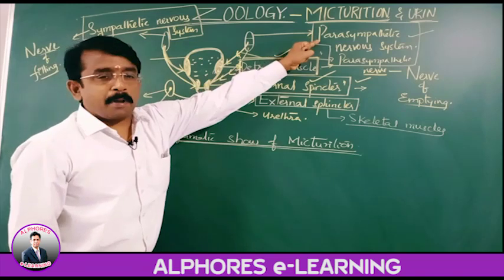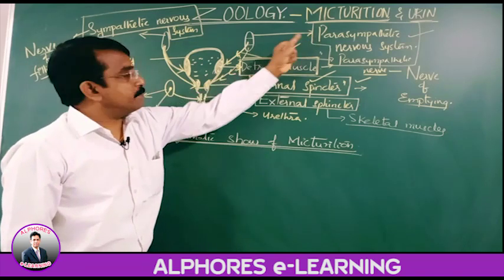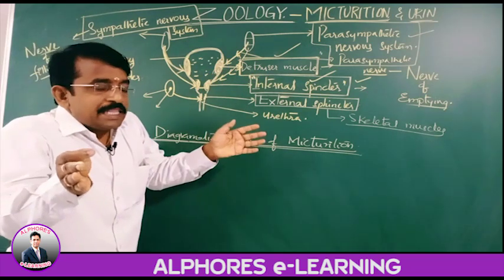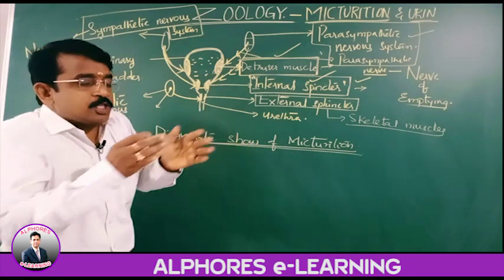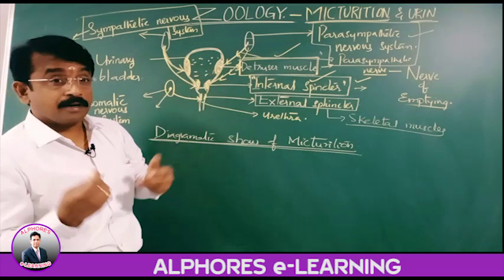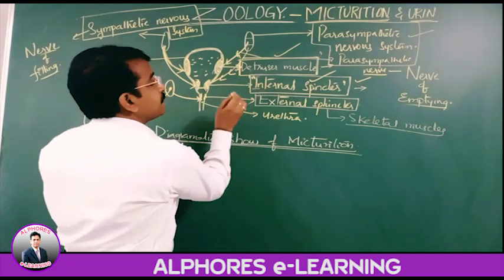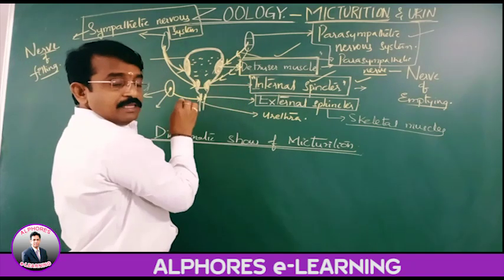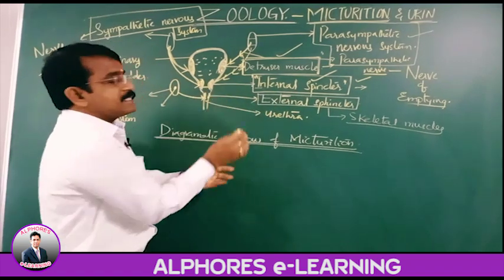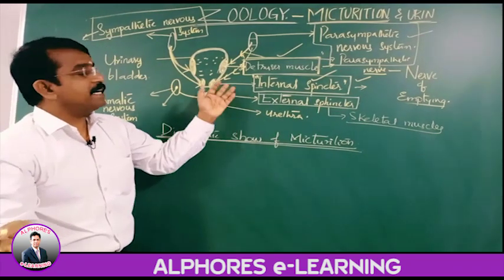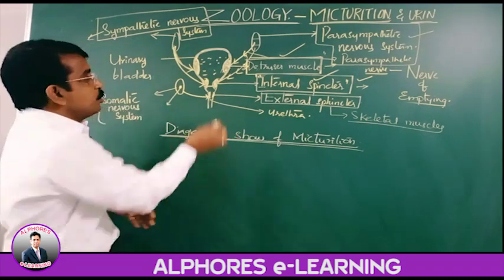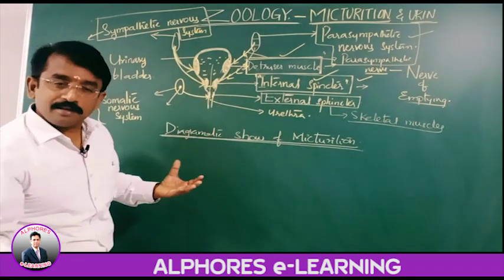The signal from the parasympathetic nervous system causes contraction of the detrusor muscles, so the urinary bladder wall constricts and pressure builds up. Simultaneously, the signal from the parasympathetic nervous system causes the relaxation of the internal sphincter, which means it gets relaxed, and urine starts moving.